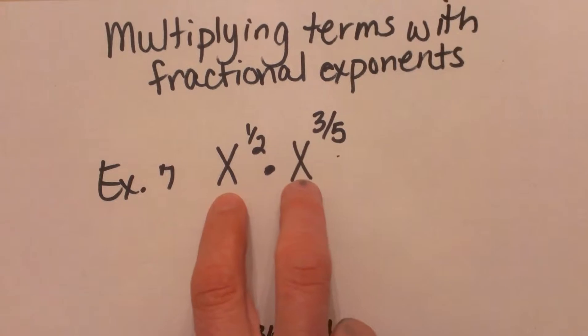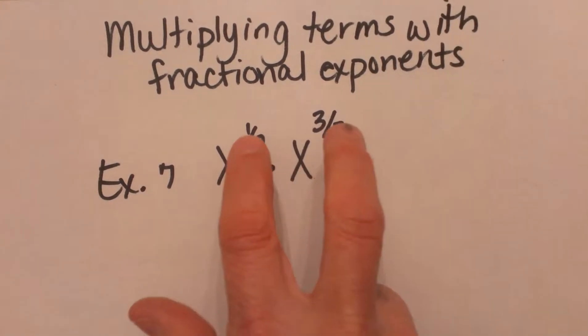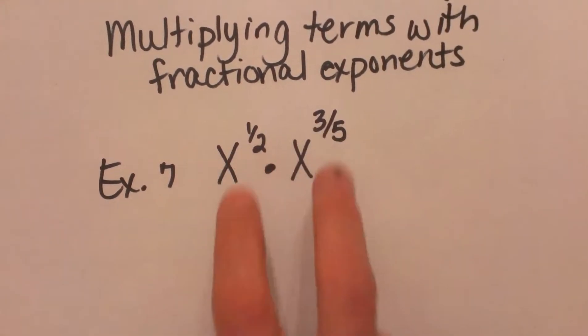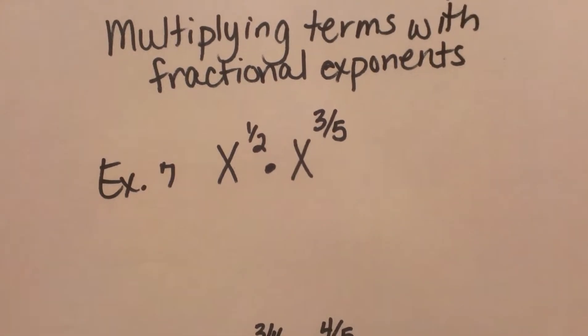Since we have like bases, we're going to add our exponents, but remember we're adding fractions so that makes it a little bit trickier.